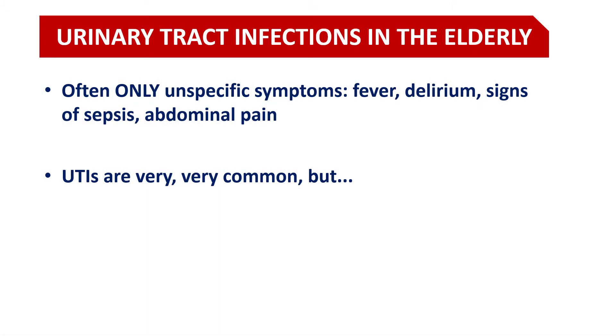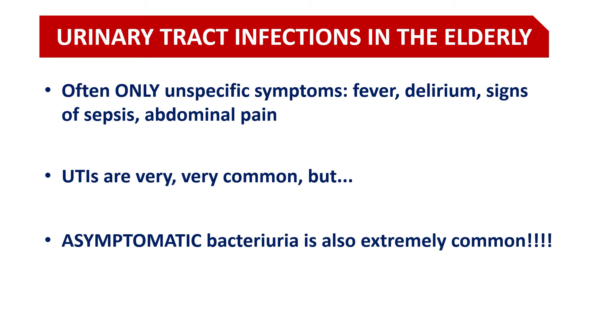So on one hand, we know that urinary tract infections are extremely common and one of the most common sources of sepsis, and that patients at risk for asymptomatic bacteriuria and pyuria are also at risk for proper urinary tract infections. On the other hand, many people — especially the elderly — have asymptomatic bacteriuria and pyuria that has nothing to do with their current symptoms. So how do we resolve this issue? There are no guidelines to help us with this everyday dilemma — it's incredible, but we don't have guidelines for this.